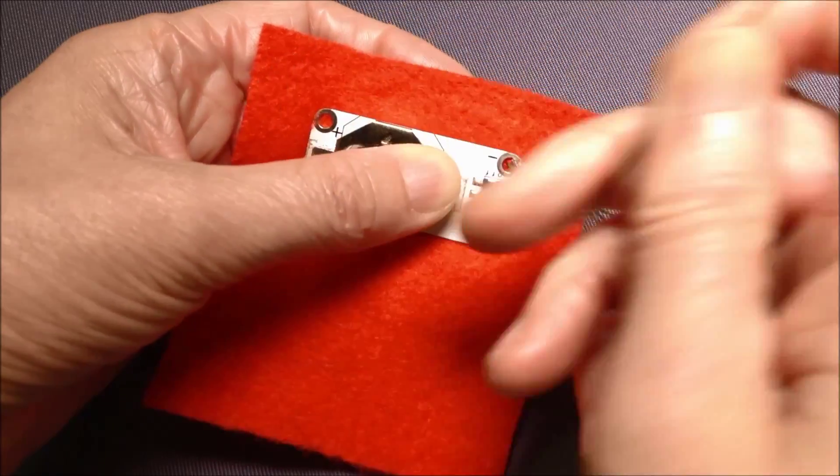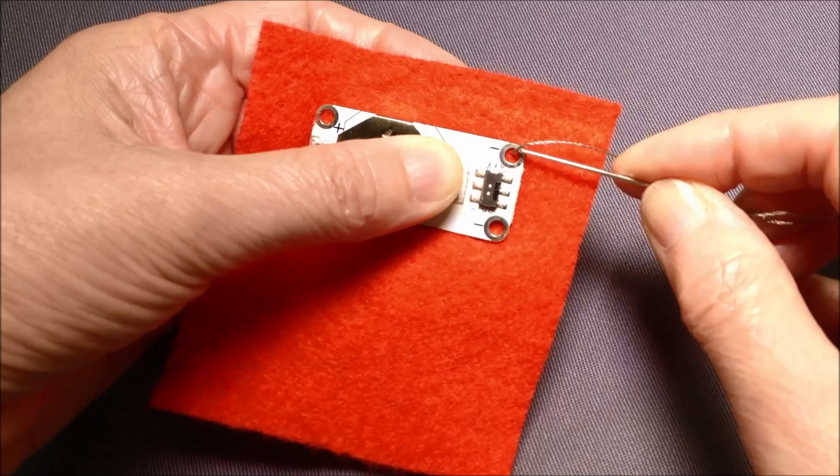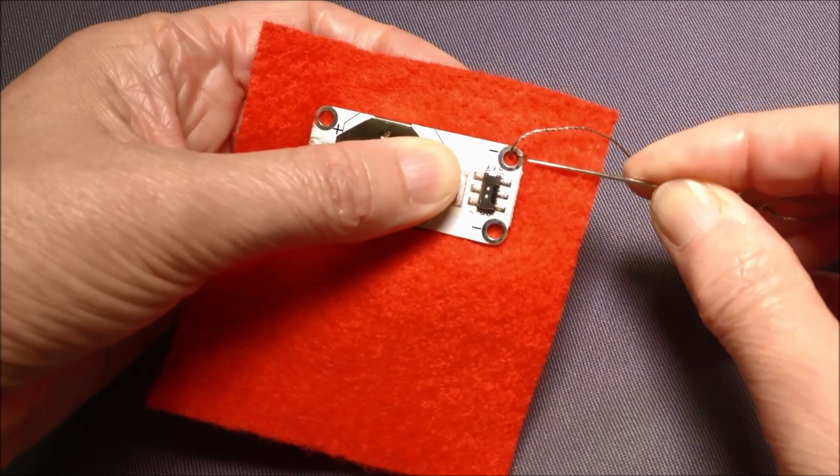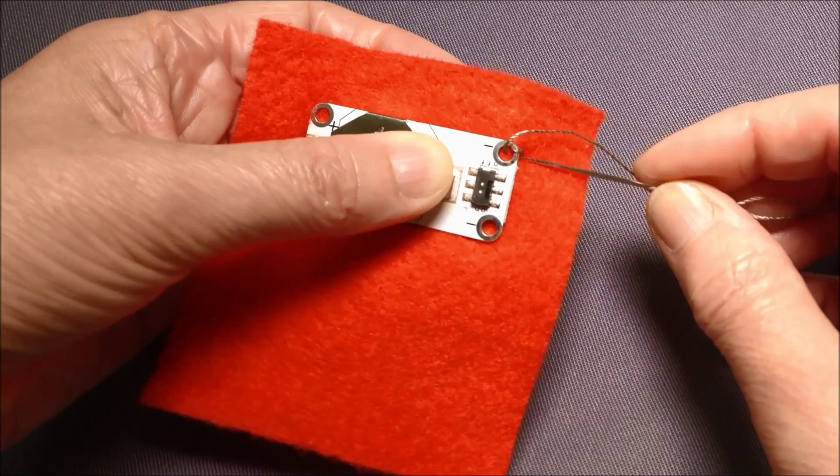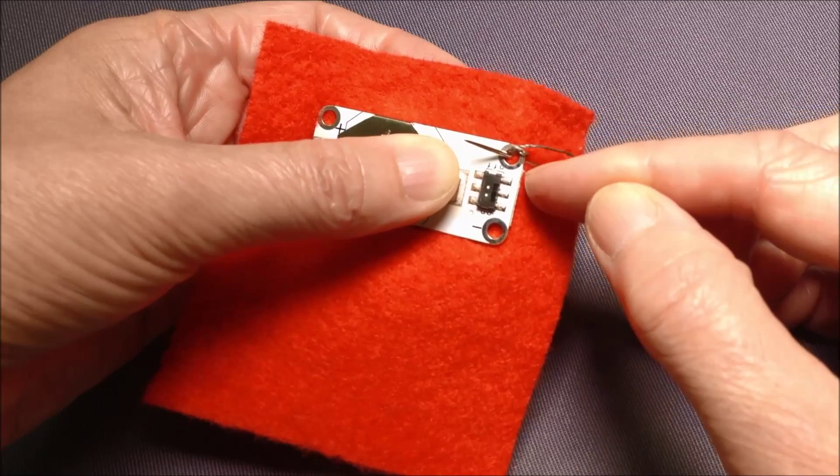So that stitch that's going to now encase the side of the cell holder is called an over sewing stitch. So just do that again. So here it's coming out the centre of the hole now, putting my needle into the side of the hole going under the actual rim of the cell holder.